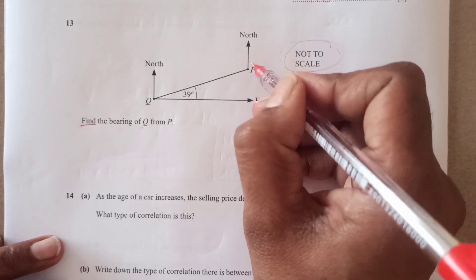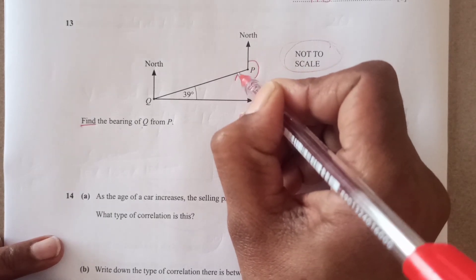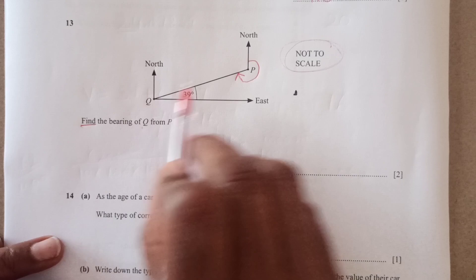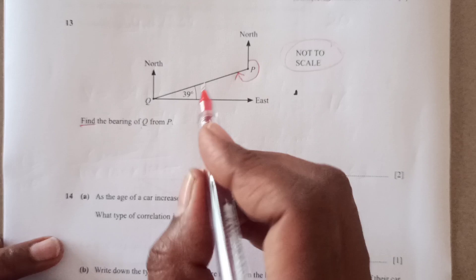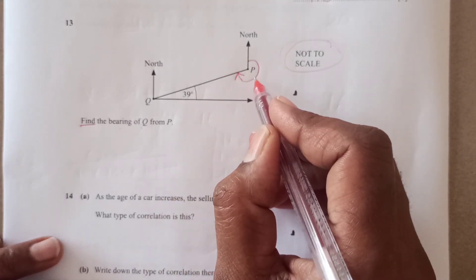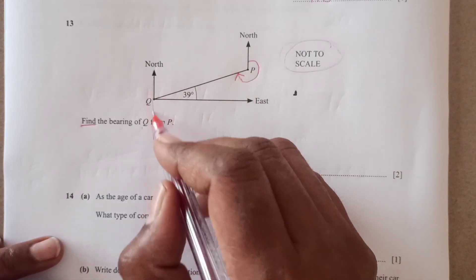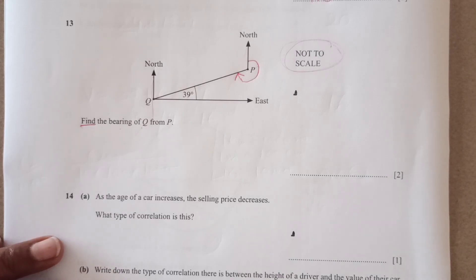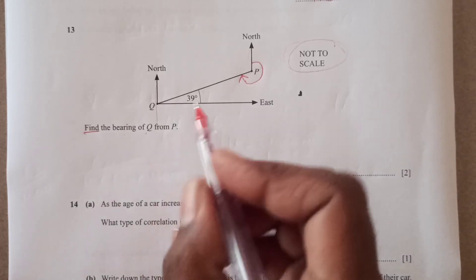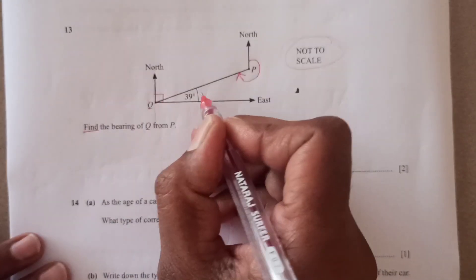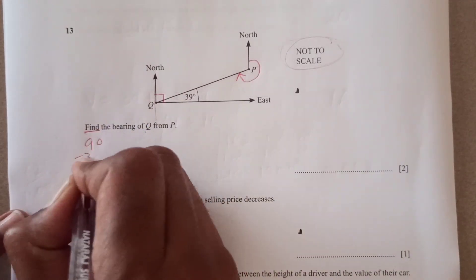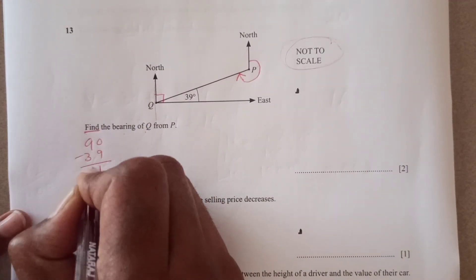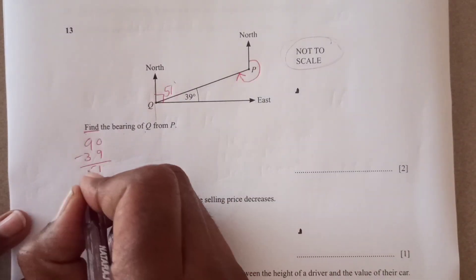So go from P like this. We are looking for this angle, right? So now as this north line, this north line, they are parallel to each other. So then we will find out this angle. So this angle is 90 here. So 90 minus 39 will be given by this. 90 minus 39, it is 51. So this angle is 51, right?